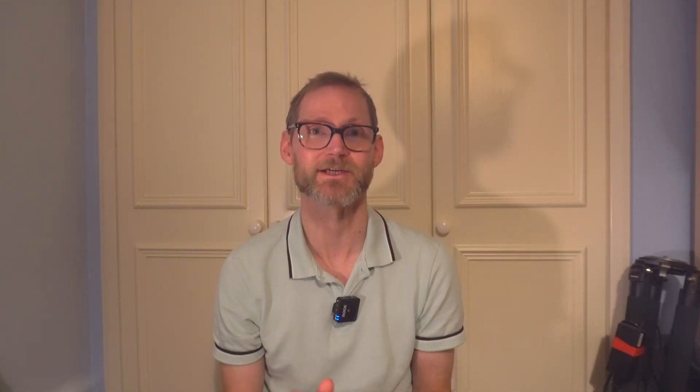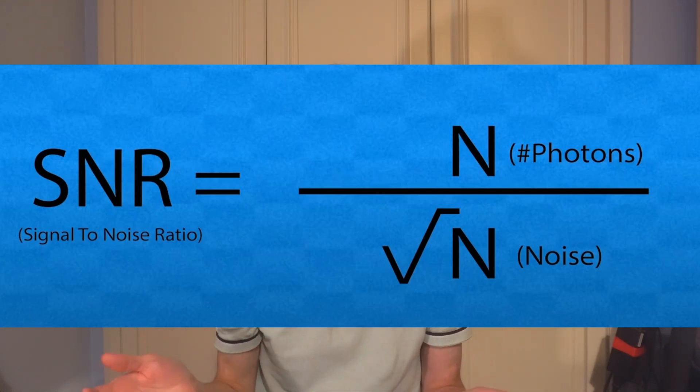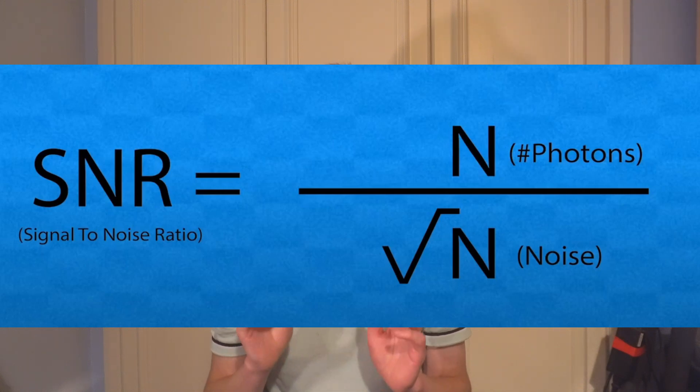So what is going on here? Why are the larger sensors cleaner? The answer lies in the signal-to-noise ratio, which is influenced by the total number of photons collected. Larger sensors capture more light, resulting in a higher signal-to-noise ratio and a clearer image. The formula for signal-to-noise is basically quite simple: it's the total number of photons over the square root of the total number of photons — so we can just take the square root of the total number of photons to get our signal-to-noise ratio.